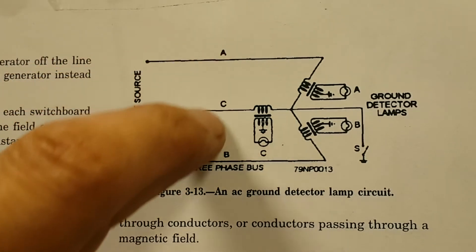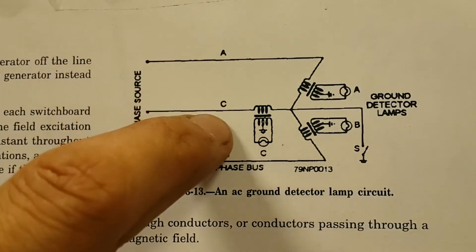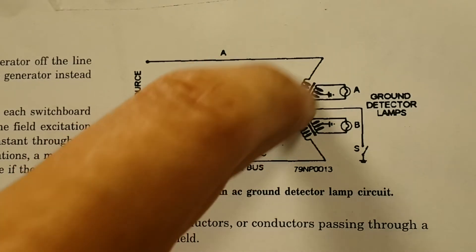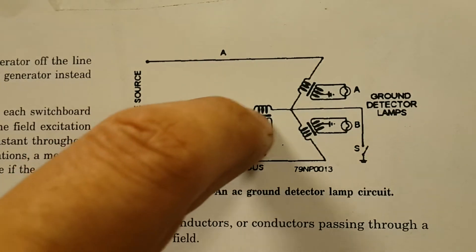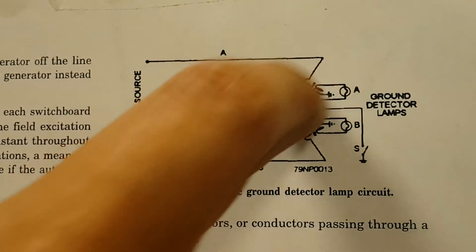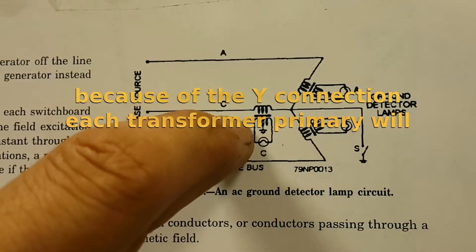So if Alpha and Bravo have power, these two lights are going to come on because power will go through both of the primary of these two transformers, and that will energize that particular transformer's light.